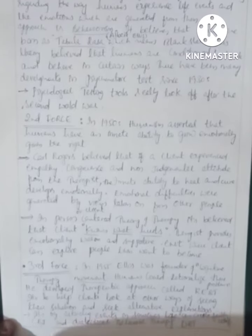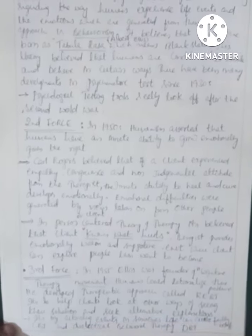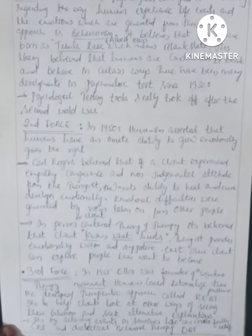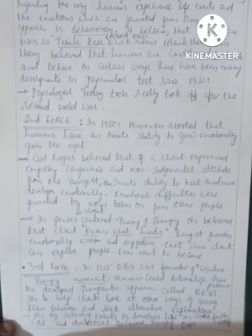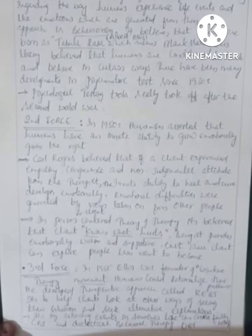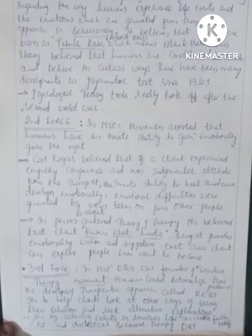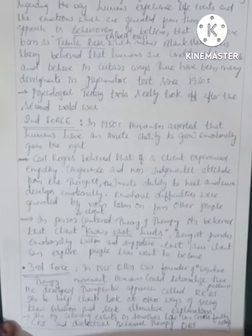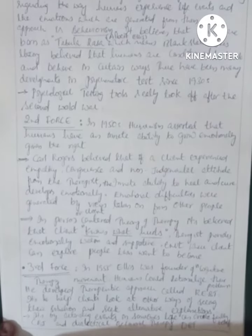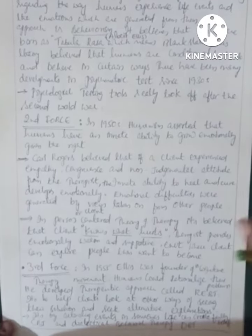Coming to the third force, around 1955, Ellis was the founder of the cognitive therapy movement. He believed humans could rationalize their problems and developed a therapeutic approach called REBT — Rational Emotive Behavioral Therapy.